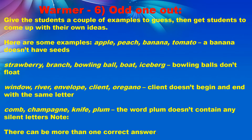Give distracting examples to make it more interesting. Another set: comb, campaign, knife, plum — the odd one is 'plum' because it doesn't contain any silent letters, while comb, campaign, and knife all do. Note that there can be more than one correct answer, so be prepared for that possibility. The TAG coordinator and teachers must prepare the examples before playing.